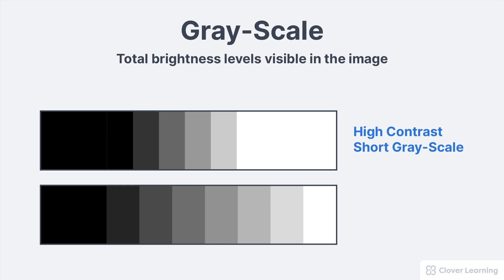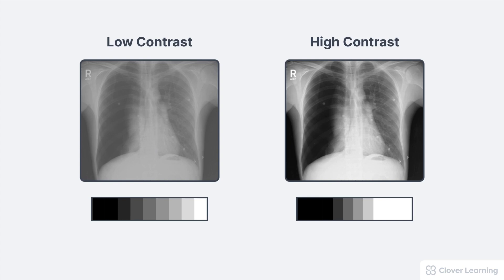The brightness levels are very different and easy to see. A low contrast image has a long gray scale — there are numerous shades of gray and very little black and white, and the brightness levels are very similar and harder to see. So when describing our sample chest X-rays, the low contrast image is said to have a long scale and the high contrast image is said to have a short scale.